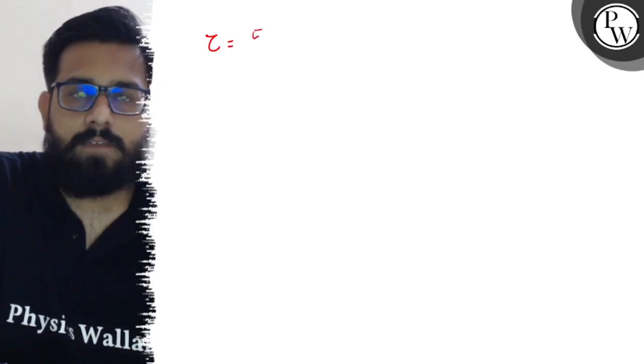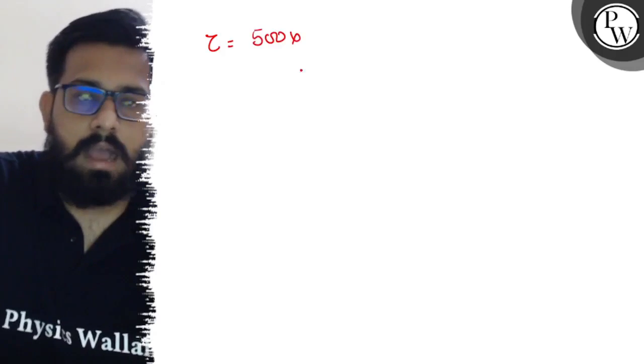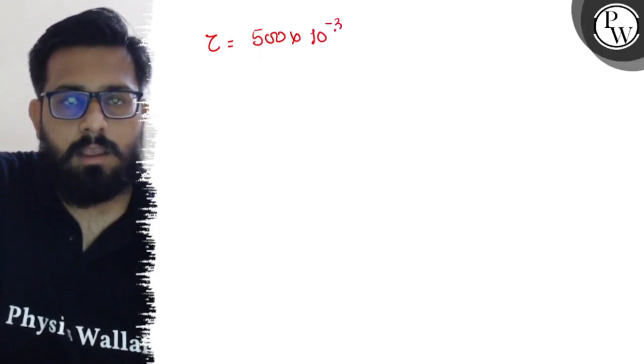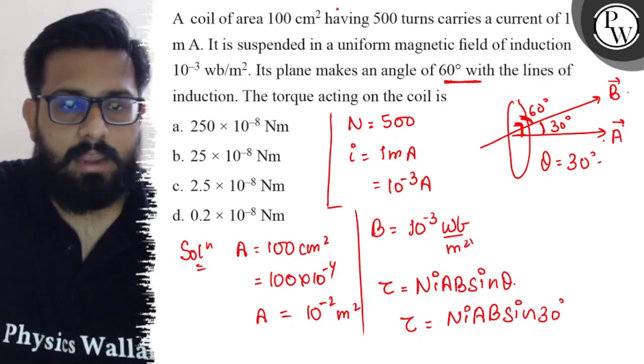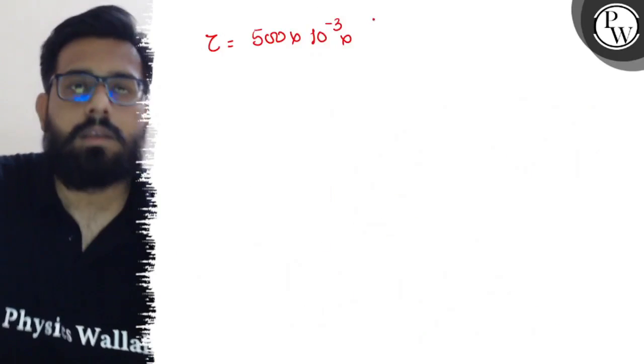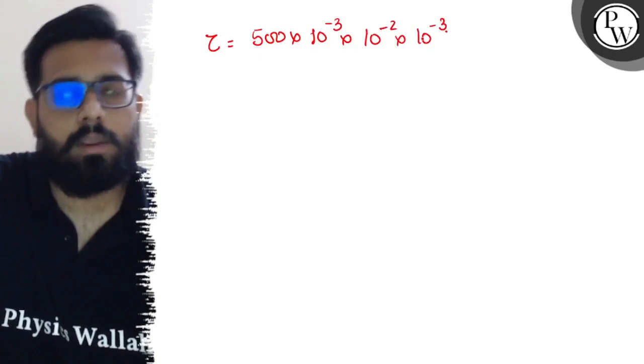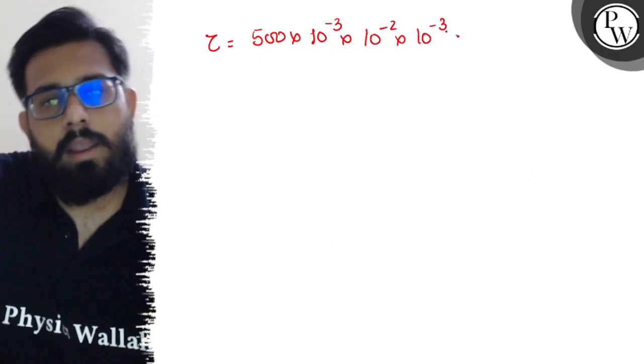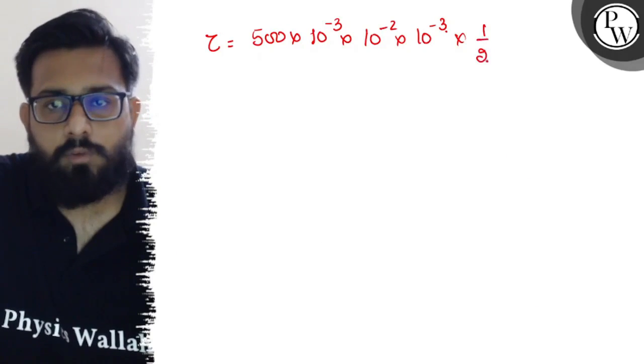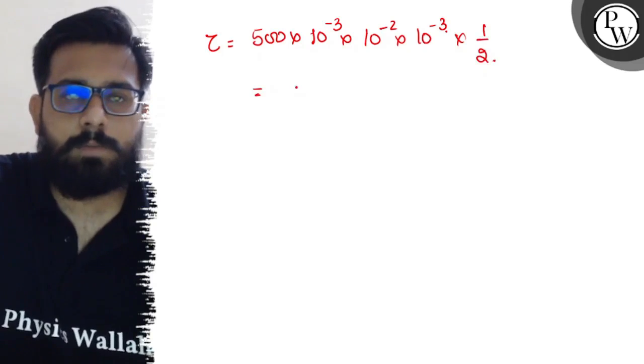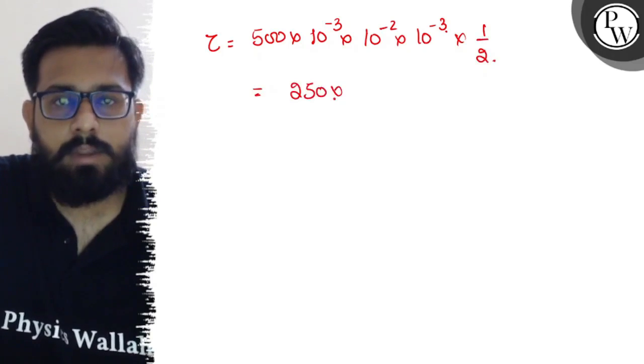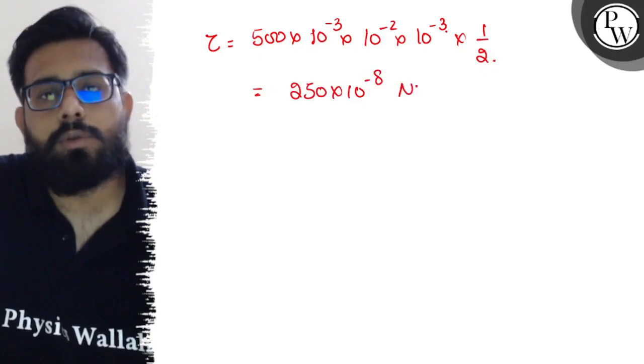So τ can be written as number of turns we have is 500 into I is 10^-3 into area, A is 10^-2, into B is 10^-3, into sin 30 degrees is 1 by 2. So from here, we solve this part. You will get a value of 250×10^-8 Newton meter. So 250×10^-8 Newton meter is absolutely the right answer.